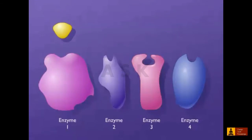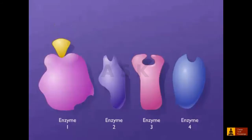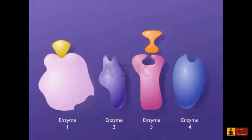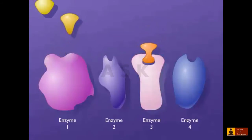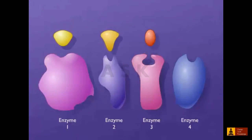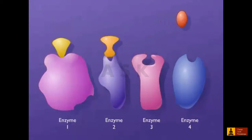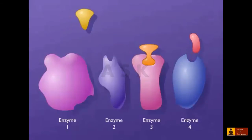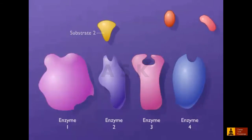Many of the enzyme-catalyzed reactions that occur in a cell, such as those involved in the biosynthesis of an amino acid, are carried out in a specific sequence called a biochemical pathway. In such pathways, the product of one reaction becomes the substrate for the next reaction.